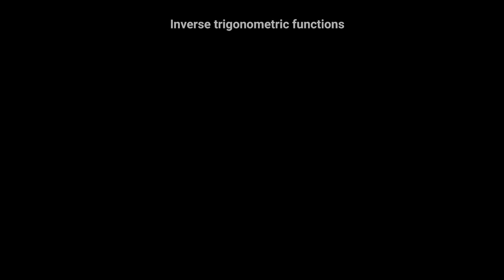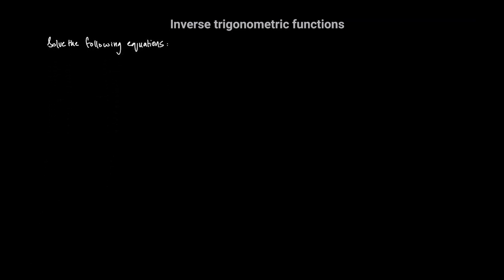In this video we're going to learn about the inverse trigonometric functions. To do that we're going to try and solve the following equations. The first equation is cosine y is equal to 3 over 4, and we have to solve for all the values of y between 0 and 2 pi radians.